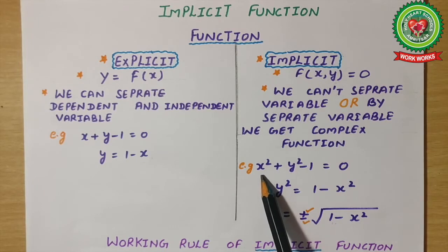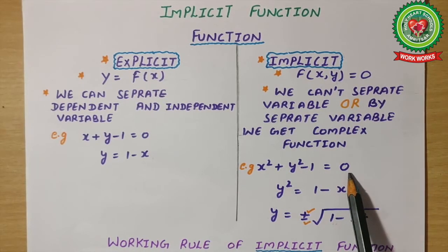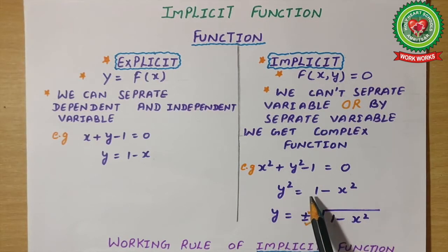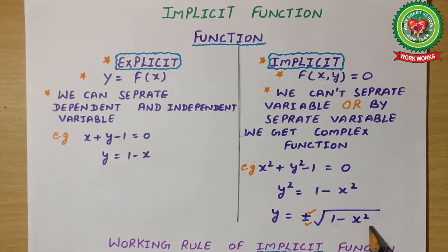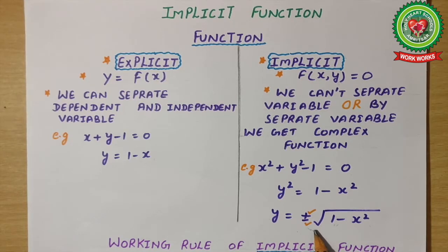Taking one example: x² + y² - 1 = 0. If I shift x² to one side, y² = 1 - x², so y = ±√(1 - x²). Now in this term you are having two cases: one for the positive and another for the negative. In this case you have to solve it for two functions, so it is difficult to solve in a simple way.